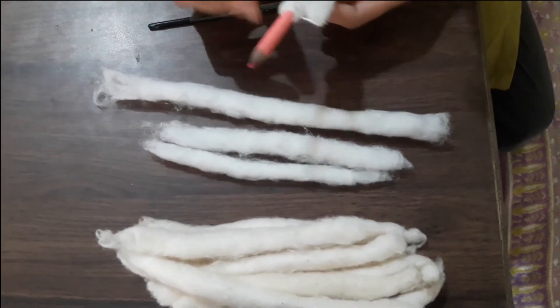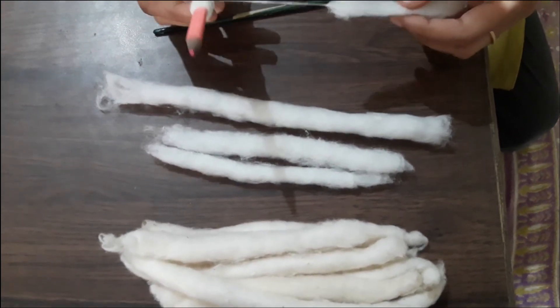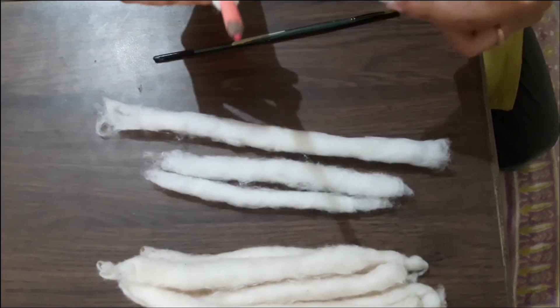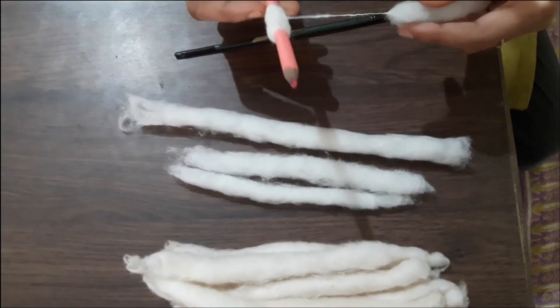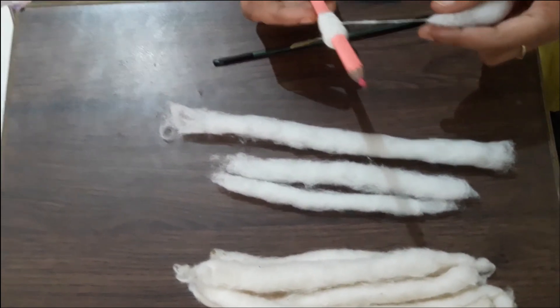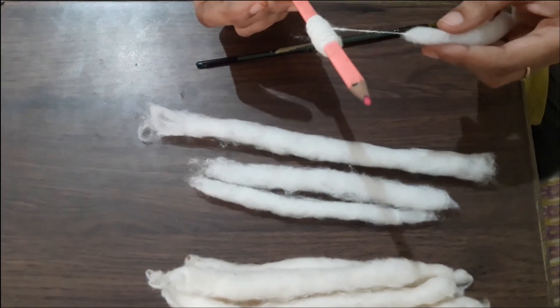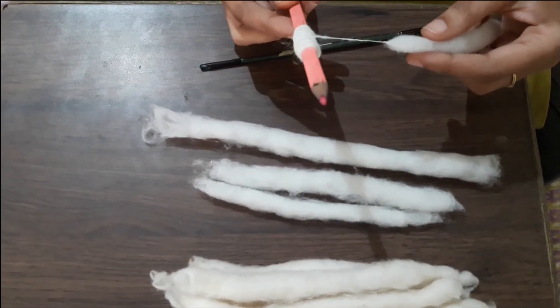And this is what we will be doing in our next video on how to spin. And all we need is a pencil. You can buy spindle wool yarn, you can get it on Amazon and places. But if you don't want to buy, the basic is all you need is a pencil to spin the yarn.